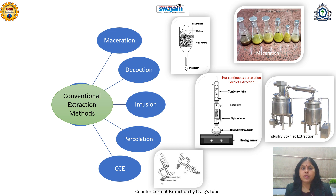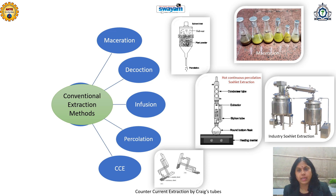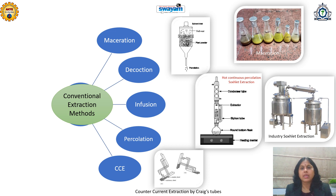As per the ancient texts of Ayurveda, Siddha, and Yunani, only 3-4 solvents are described — alcohol, water, hydroalcoholic combinations, cow urine, and cow milk — for extraction and preparation of specific drugs. The next prerequisite is the choice of method. There are two types: conventional extraction methods and modern extraction methods.